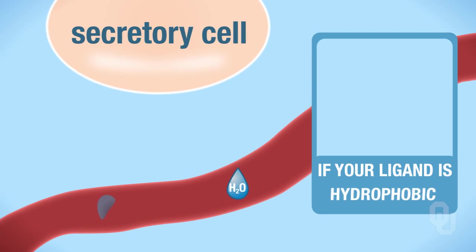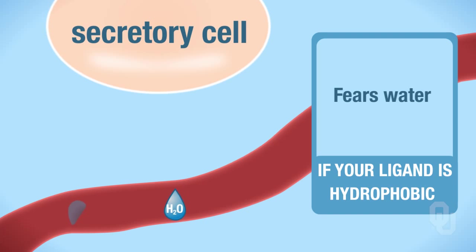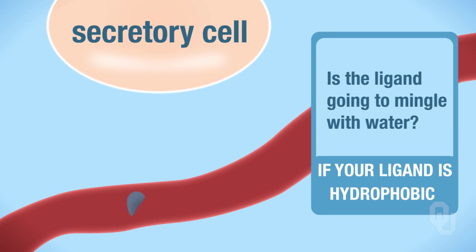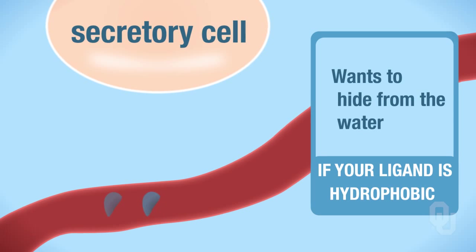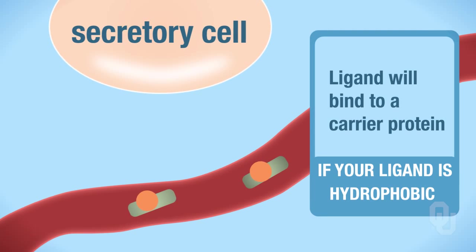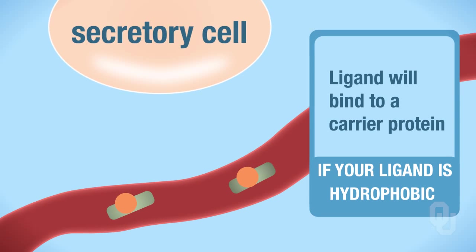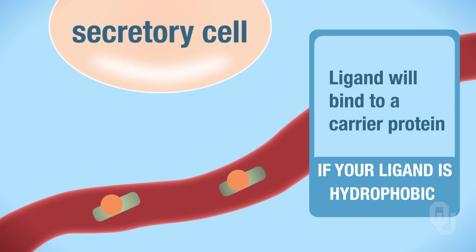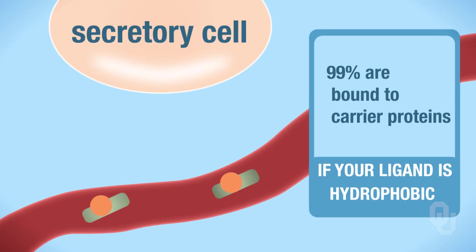Now, if your ligand on the other hand is hydrophobic, it fears the water. So if this ligand is afraid of water, is it going to want to mingle with the water? No, because it's going to be afraid of the water — it wants to try to hide from the water. The ligand will bind to a carrier protein. That carrier protein is present in the plasma. So the ligand is hydrophobic; it's afraid of the water, so it's hiding from the water by being bound to a carrier protein. Now, about 99% of hydrophobic ligands are actually bound to carrier proteins.